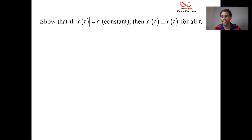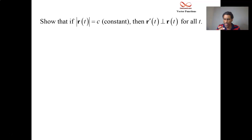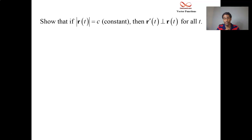Here's an interesting concept — we're going to prove it. If you have the magnitude of your position vector constant, then it will be the case that your position vector is orthogonal to your velocity vector for all time t. How can you prove two vectors are orthogonal? You're going to look at their dot product and show that it is zero.